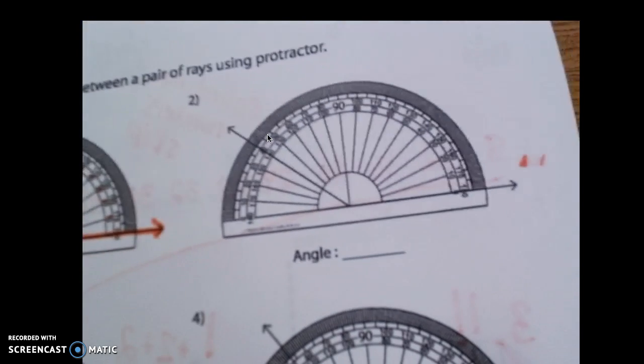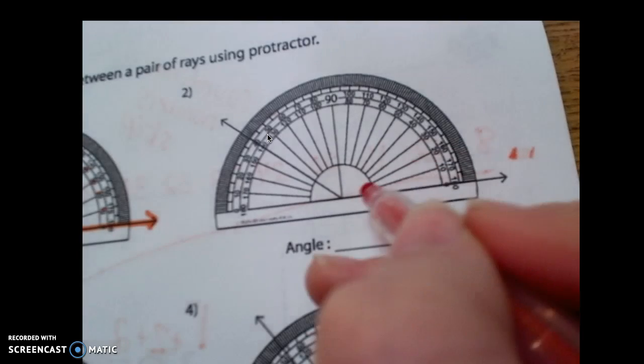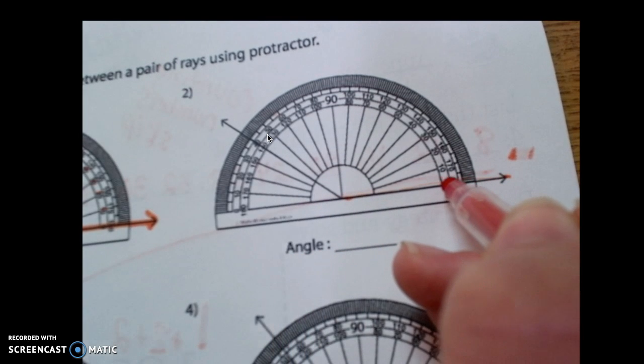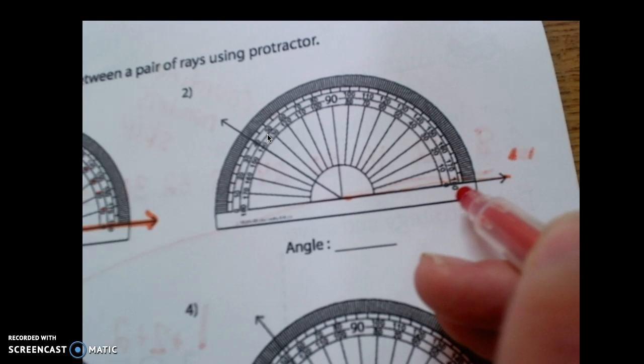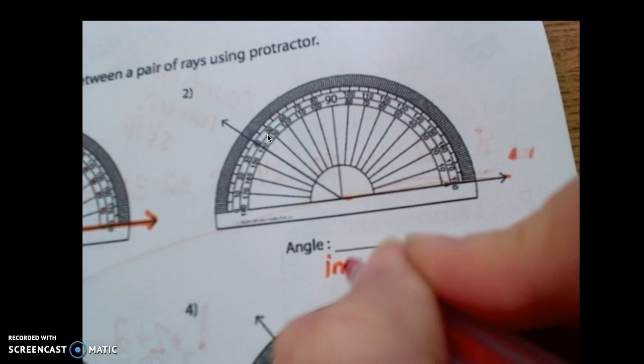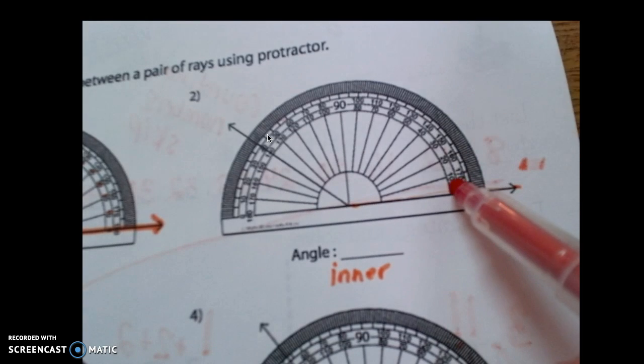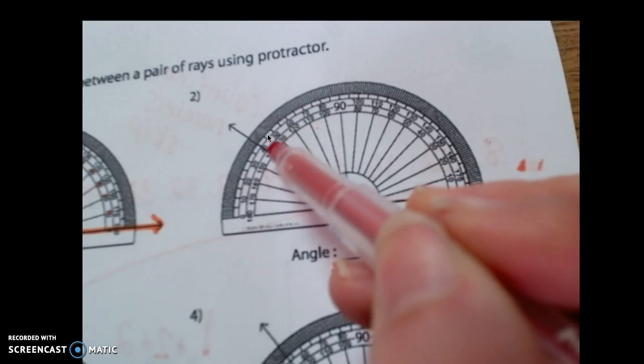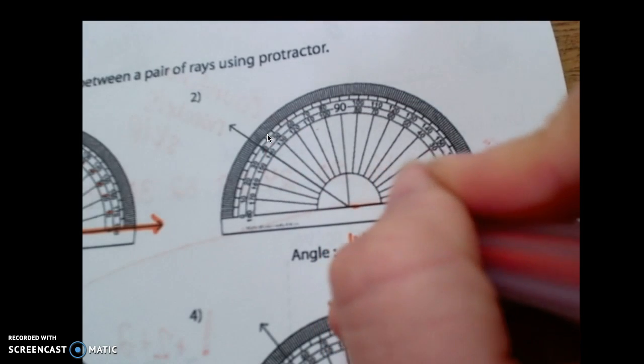And we're going to do the same thing right here. This bottom ray is pointing this way. So we're going to use the inner scale because that's where zero is. So we're going to write inner. And we're going to count up all the way, 100, 110, 120, 130, 140 degrees.